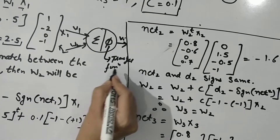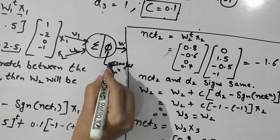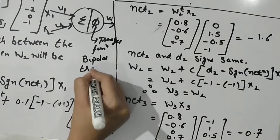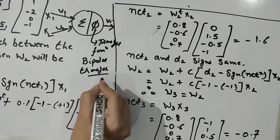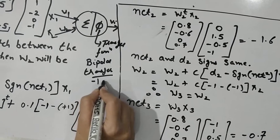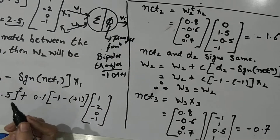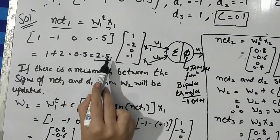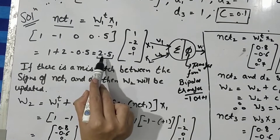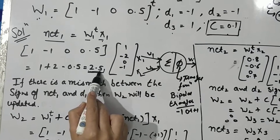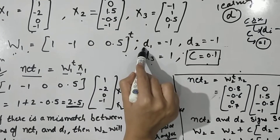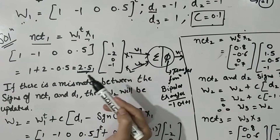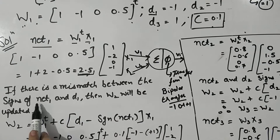The summed values are not your final output — you must pass them through a transfer function, also called a threshold function. In the perceptron learning rule, this is the bipolar transfer function, which gives either +1 or -1. Since net is positive, we consider it as +1. We then compare this actual output with the desired output d1=-1, and there is a mismatch.